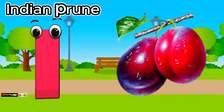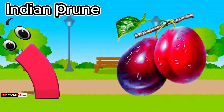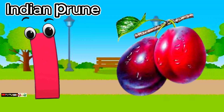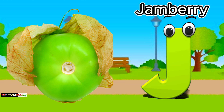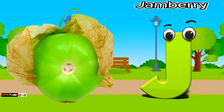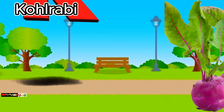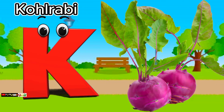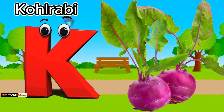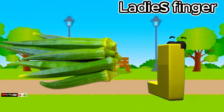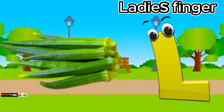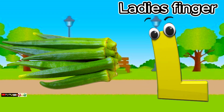I is for Indian prune. I, i, Indian prune. J is for jamberry. J, j, jamberry. K is for kohlrabi. K, k, kohlrabi. L is for lady's finger. L, l, lady's finger.